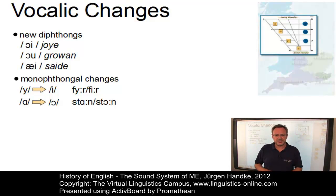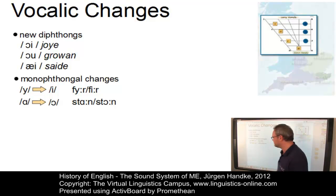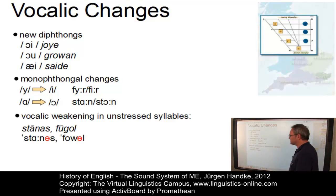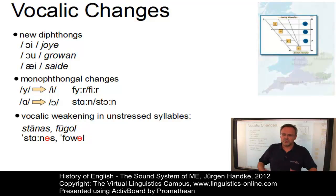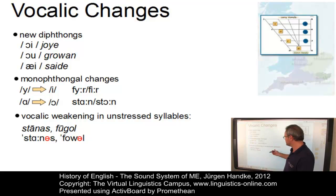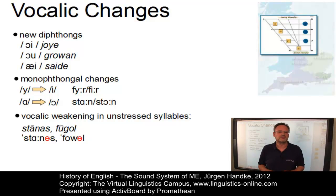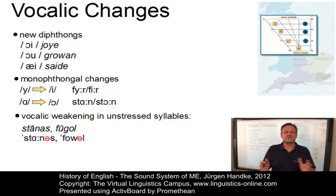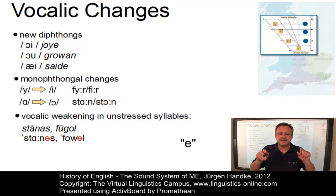The most influential change was the weakening of vowels in unstressed syllables, all of them appearing as the central vowel schwa. The examples listed are 'stānas' which became 'stanes', and 'fugol' which became 'foal'. In spelling, unstressed vowels were mostly represented by the character E.